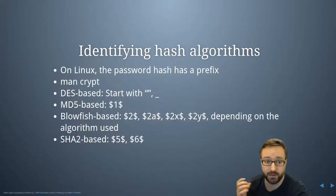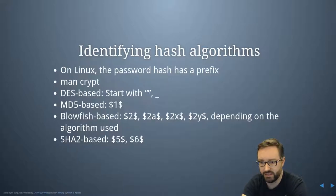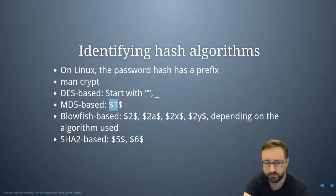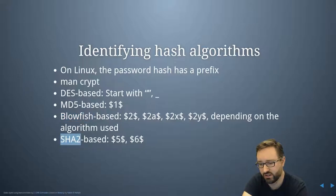Continuing on the topic of password security, on a shadow file on a Unix system such as Linux there is a prefix in the shadow file that tells you, along with the password, what hash function was used. If you have a $1 at the start, that means it's MD5-based. $2 is Blowfish, which was created by Bruce Schneier and his team. There's also SHA2-based options, which include $5 or $6.